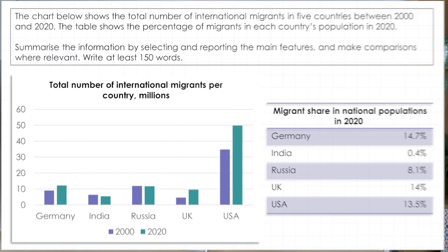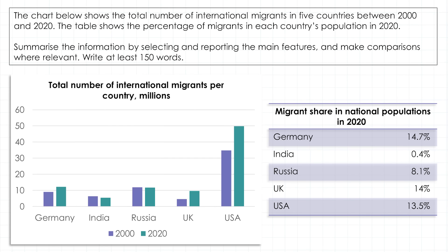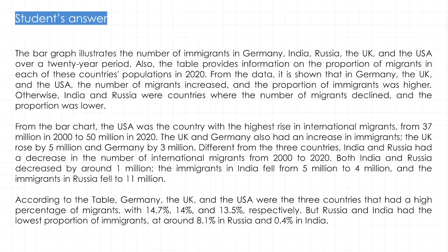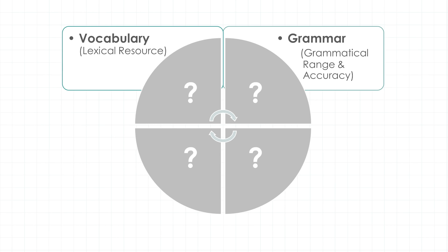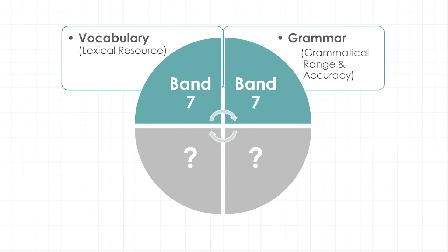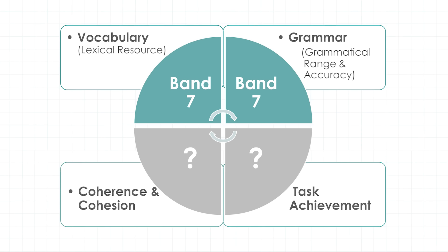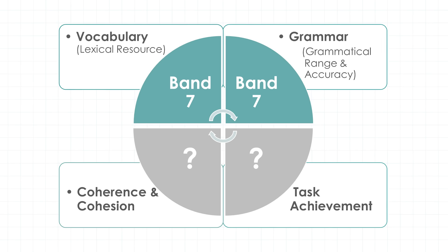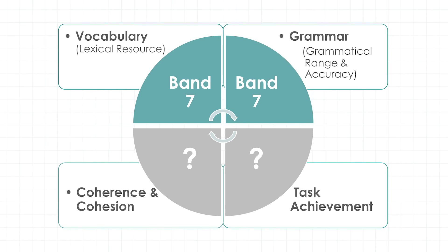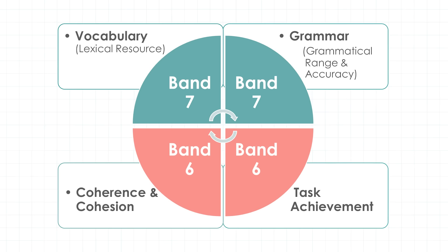I gave this task to a student of mine and he wrote this report that would probably get a score of 6.5. Here is the frustrating bit: his vocabulary and grammar are good enough for that magic band 7. But when it comes to his writing skills, his task achievement and the so-called coherence and cohesion, or how well he structures and links his ideas, he wouldn't get above a band 6, which will result in a task score of 6.5.